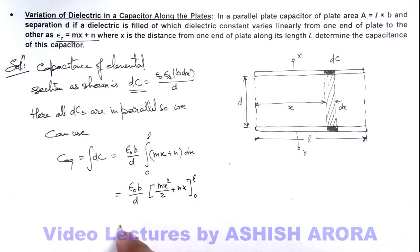And on substituting the values we are getting ε₀b/d(ml²/2 + nl). That will be the answer to this problem.